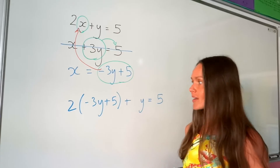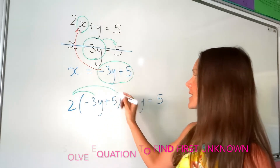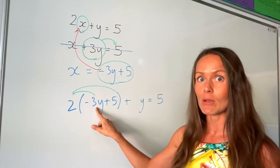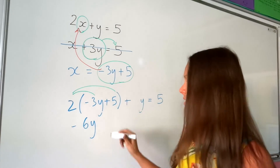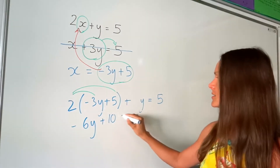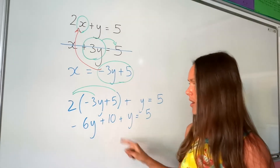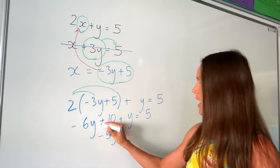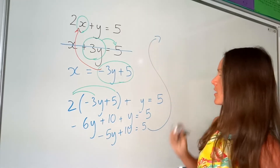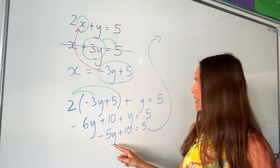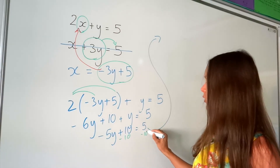So now we need to expand the brackets and solve this equation that only has y as the unknown. If I expand these brackets, I get 2 multiplied by negative 3y, which is negative 6y. Then I've got 2 multiplied by 5, which is positive 10. And everything else stays the same. Now I can simplify: I've got negative 6y plus 1y, which is negative 5y. I'm going to carry this on to solve the equation. I need to get y by itself, so I'm going to get rid of this positive 10 by subtracting 10 from both sides.